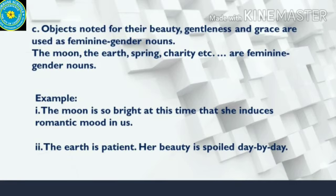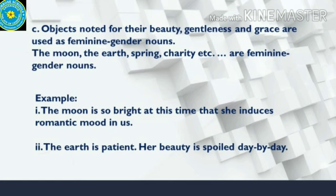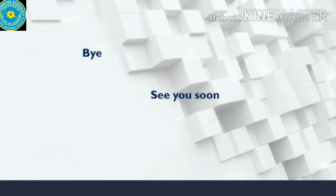Here are other examples that come under feminine gender. Objects noted for their beauty, gentleness or grace all come under feminine gender nouns. Examples: the moon, the earth, spring season, charity — words that have a feminine feel come under feminine gender. 'The moon is so bright at this time that she induces a romantic mood in us.' 'The earth is patient — her beauty is spoiled day by day.'